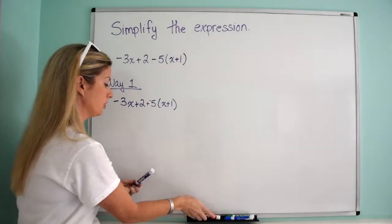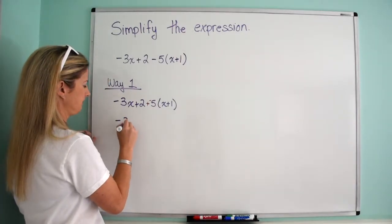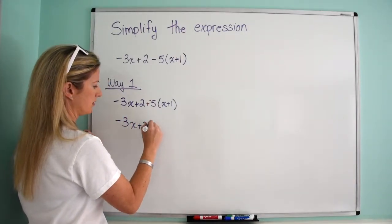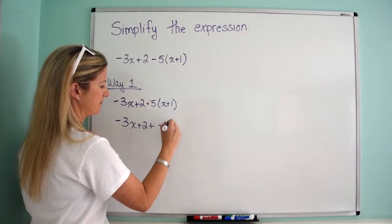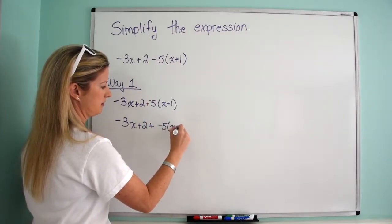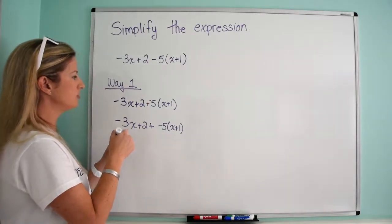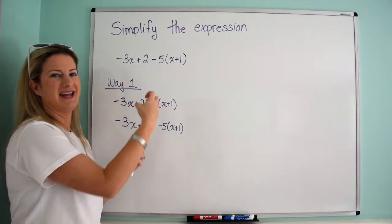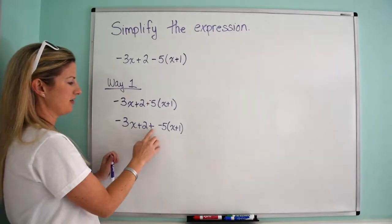So if you want to see that rewritten, it would look like this, and then it would be negative 5 times the quantity x plus 1. And what I'm doing is I always say the number you're distributing takes the negative or takes the sign.